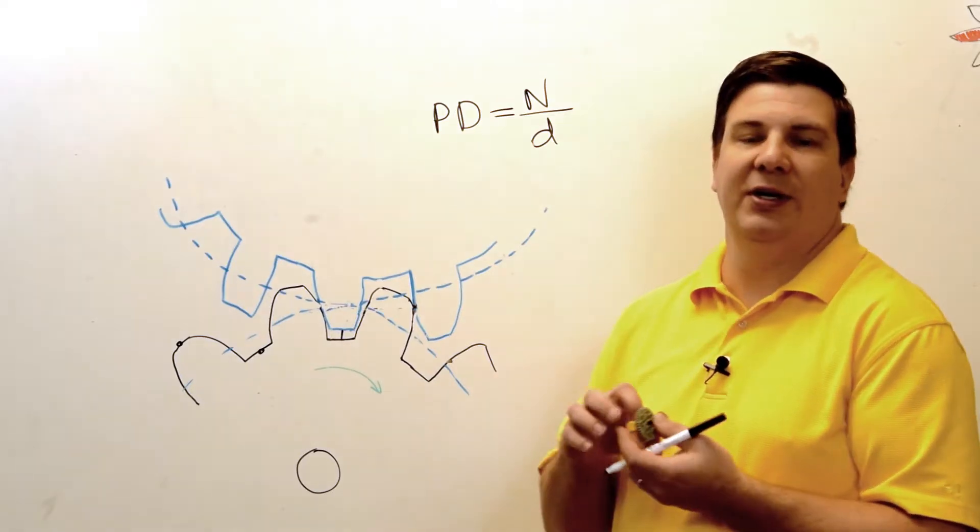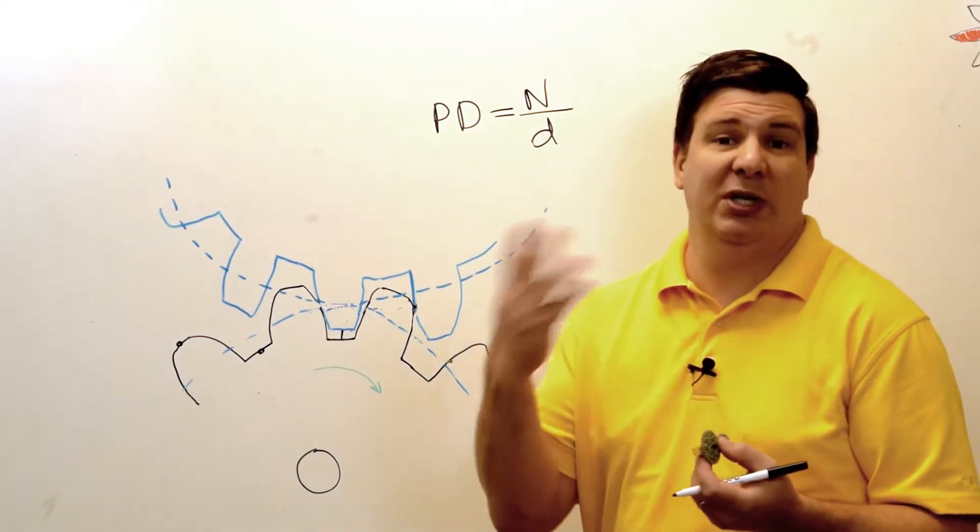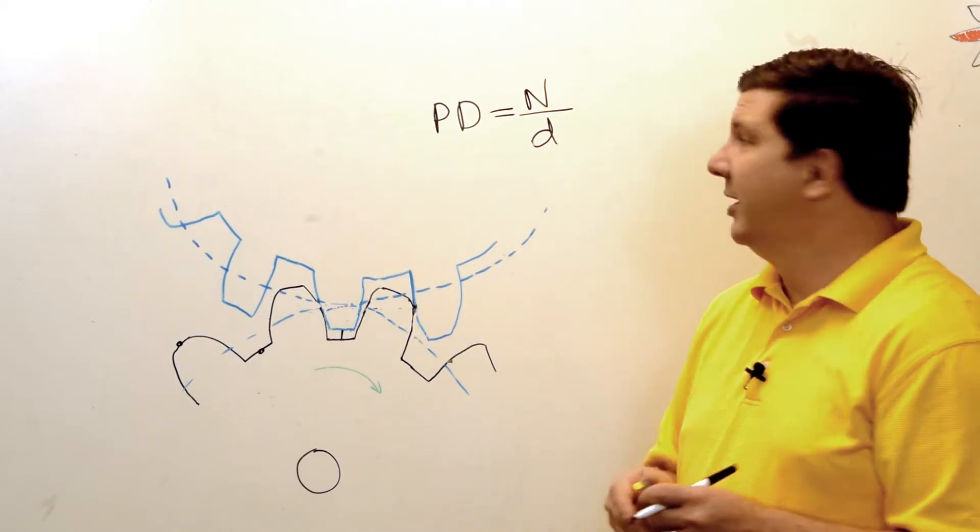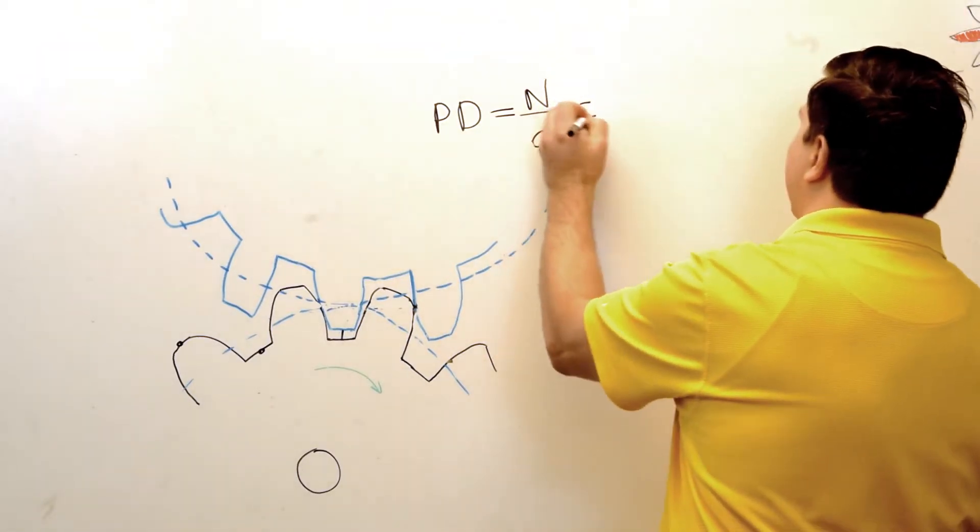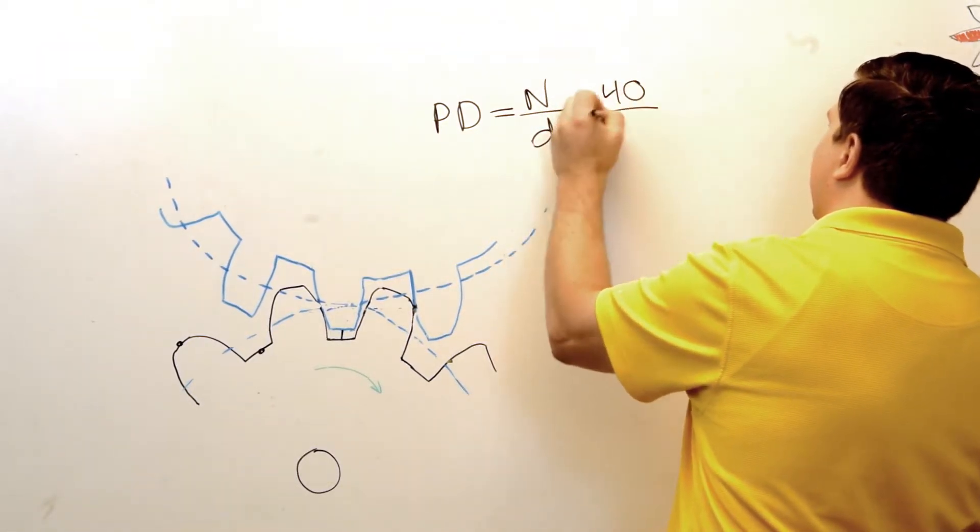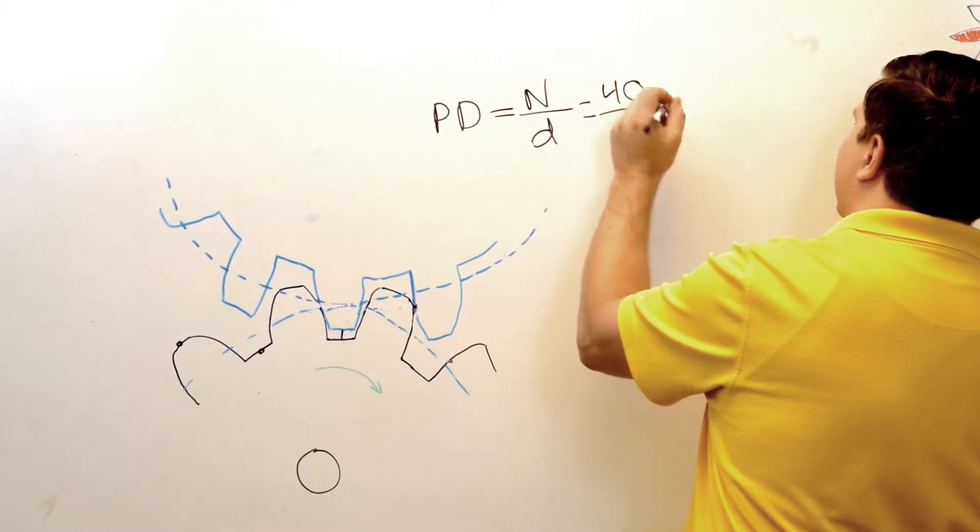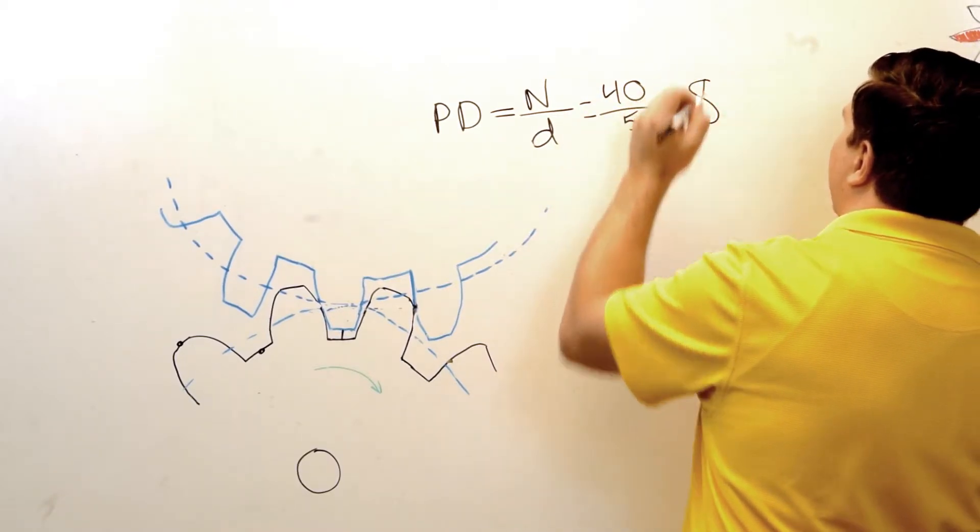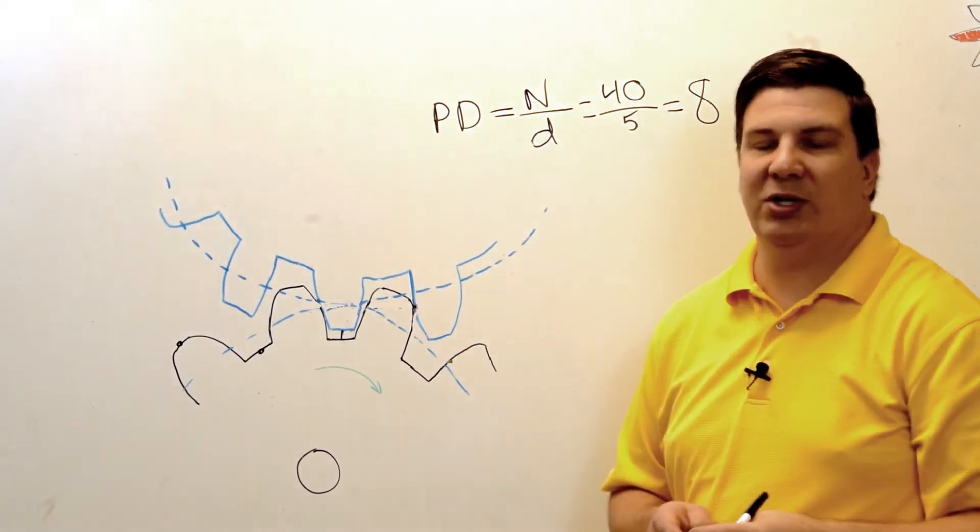And it has, from the center, one, two and a half spaces. So I'm going to need to multiply that by two, and I get five. So I get 40 teeth, five spaces, and that equals eight. So that's a pitch diameter of eight.